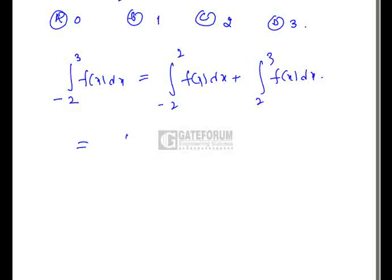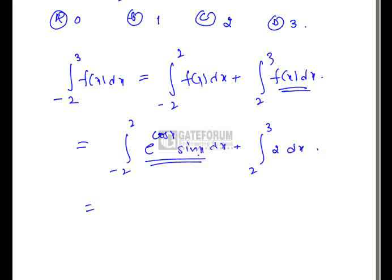In the interval minus 2 to 2, f of x is nothing but e to the cos x into sin x dx plus 2 to 3 f of x. Anything above 2 is 2 dx. Now this function, if I substitute x as minus x, this will be an odd function. It will be minus of e to the cos x into sin x. If it is odd function, their integral will be 0 plus integration of 2, 2 is a constant. So it will be 2x, 2 to 3 which is nothing but 0 plus 6 minus 4 that is equals to 2. That is option C.